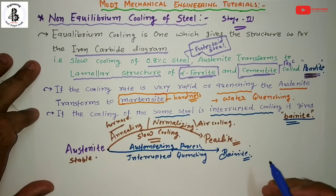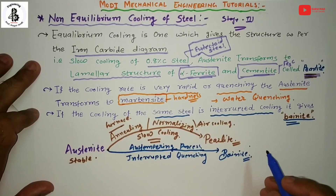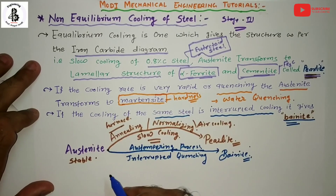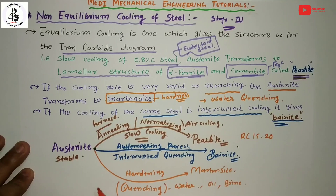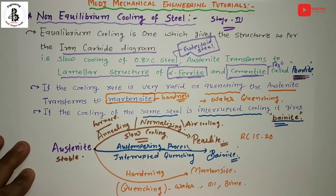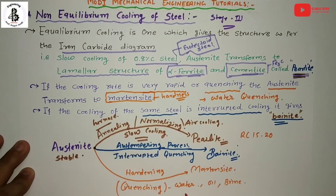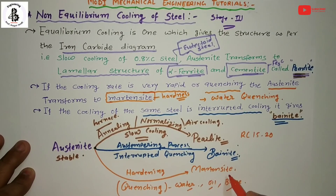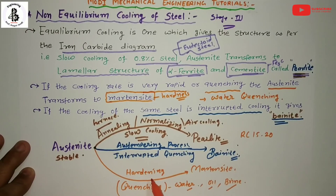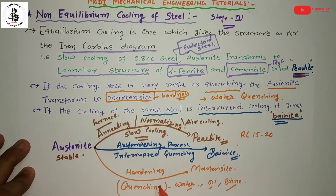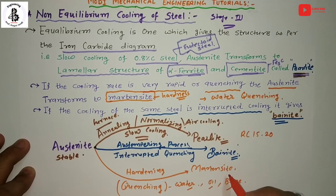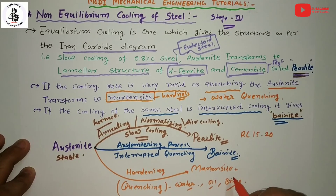Finally, heat the material to the stable austenite phase and perform rapid cooling — quenching. The quenching media used are water quench, oil quench, and brine solutions. By this quenching process, martensite structure is formed. This is technically known as the hardening process. The hardening process converts stable austenite into martensite, which has the highest hardness.